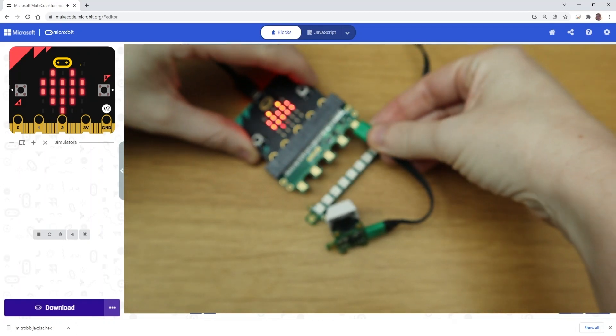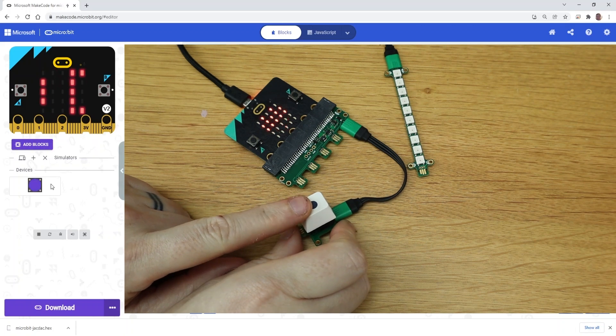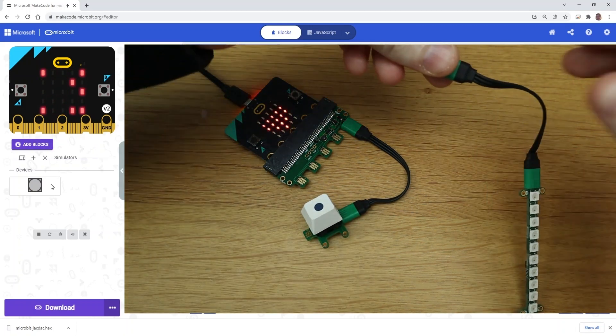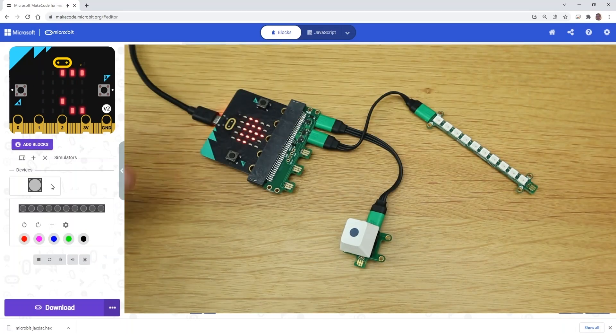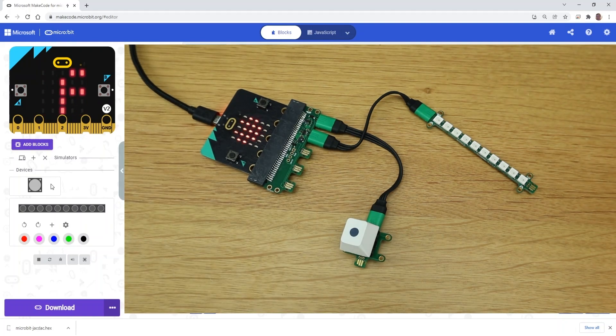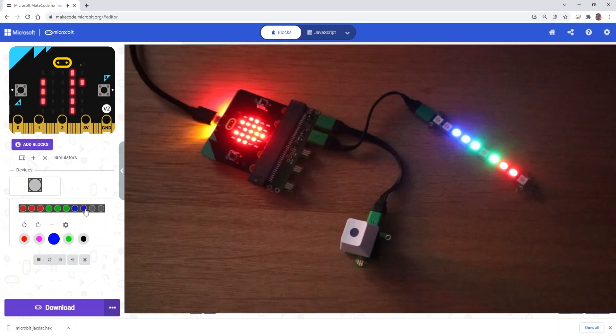So when you plug in some Jackdac modules, they should appear on the simulator. So I'm going to plug in this button and you'll see it here. So this is the really cool thing about Jackdac. So I'm going to press it. You'll see on the simulator it's being pressed. So it's like a live simulator. So let's add the NeoPixel strip and that came pretty fast and we're going to kind of reverse it. So we're going to do something on the simulator and it's going to appear in real life.